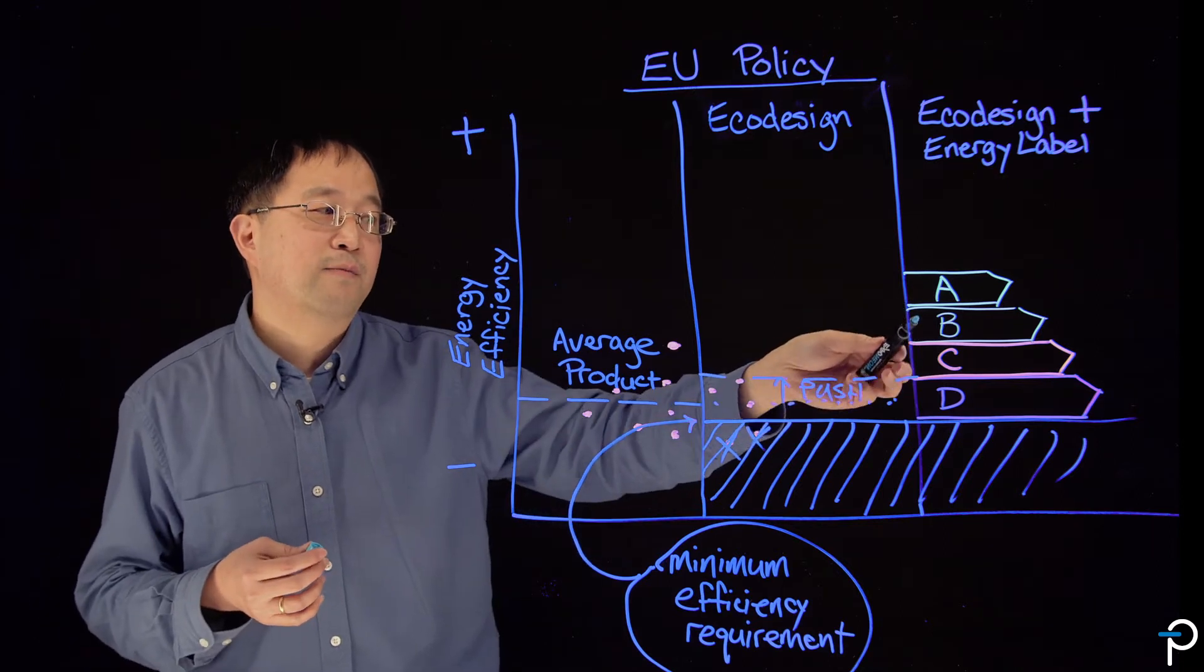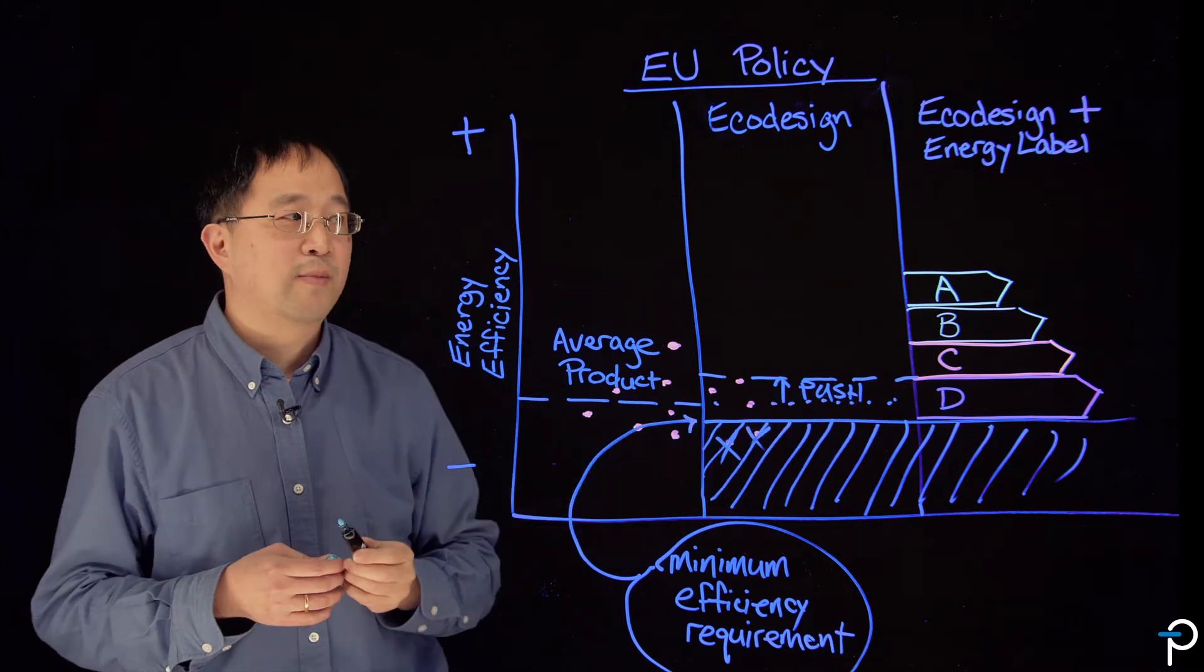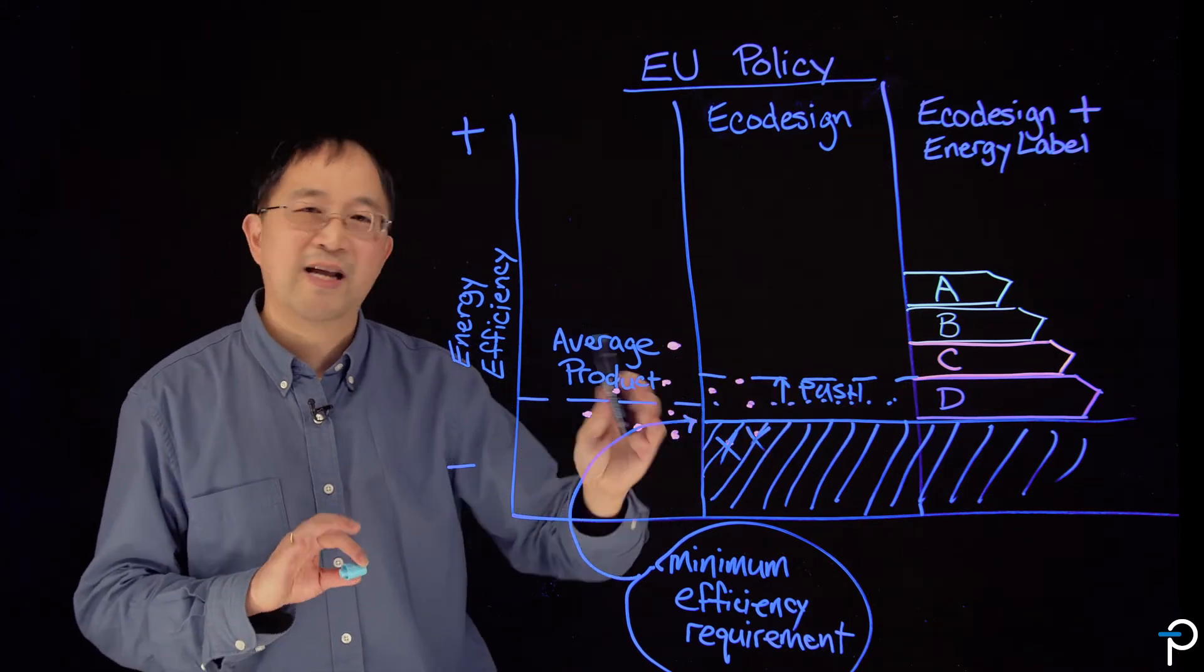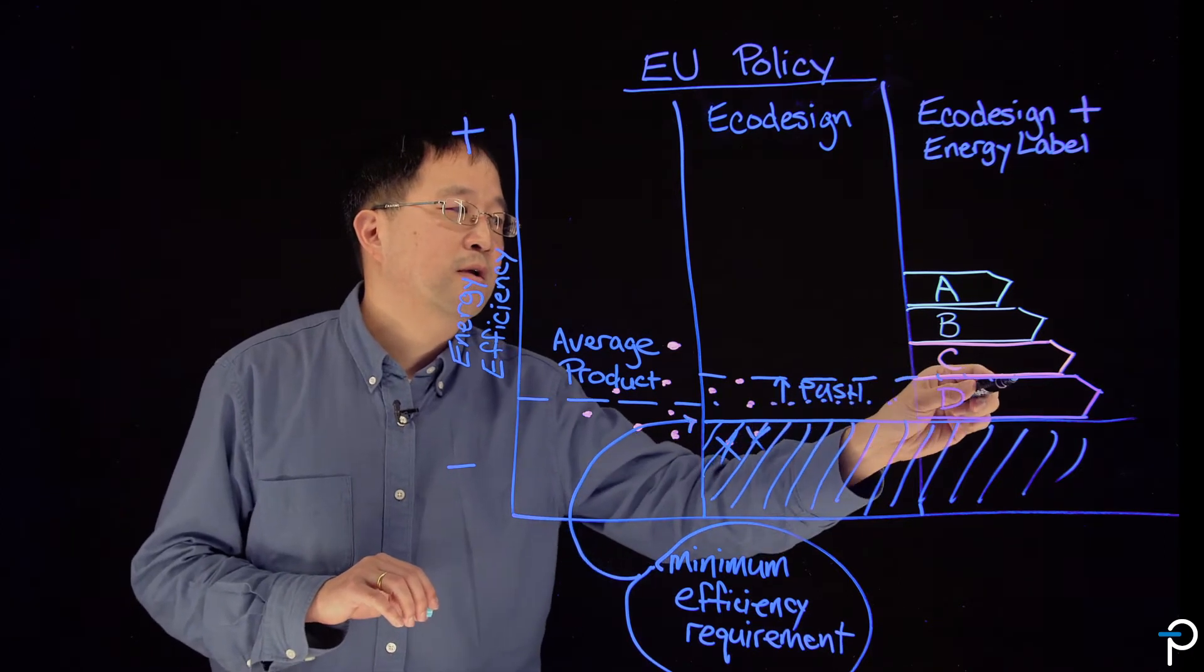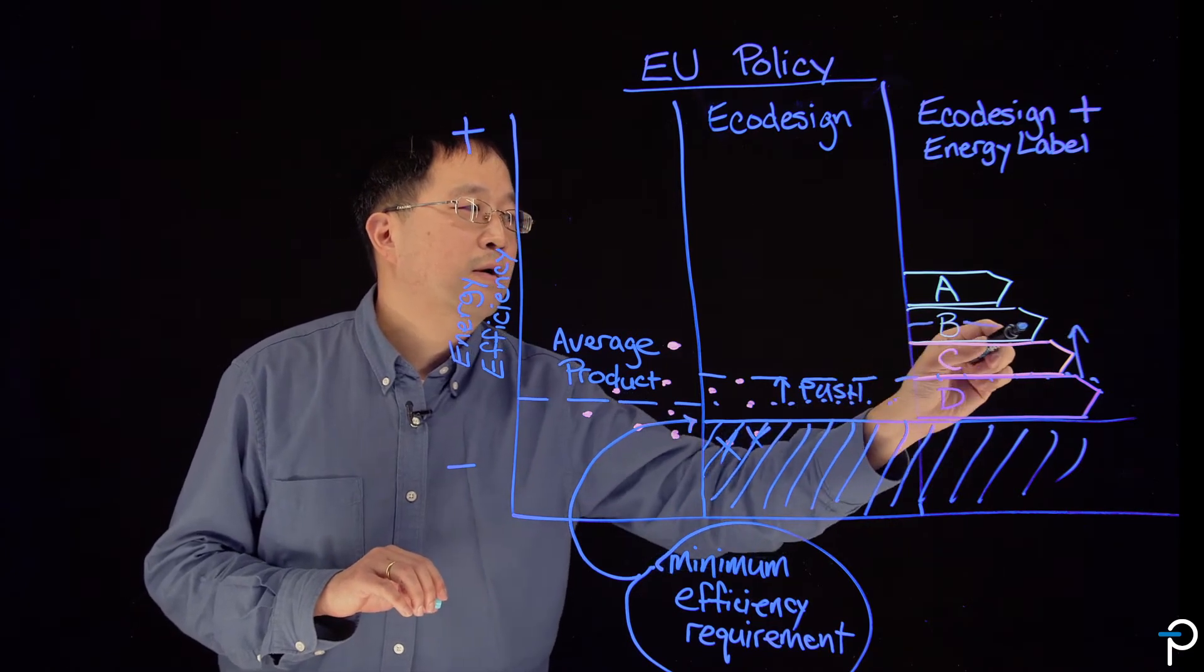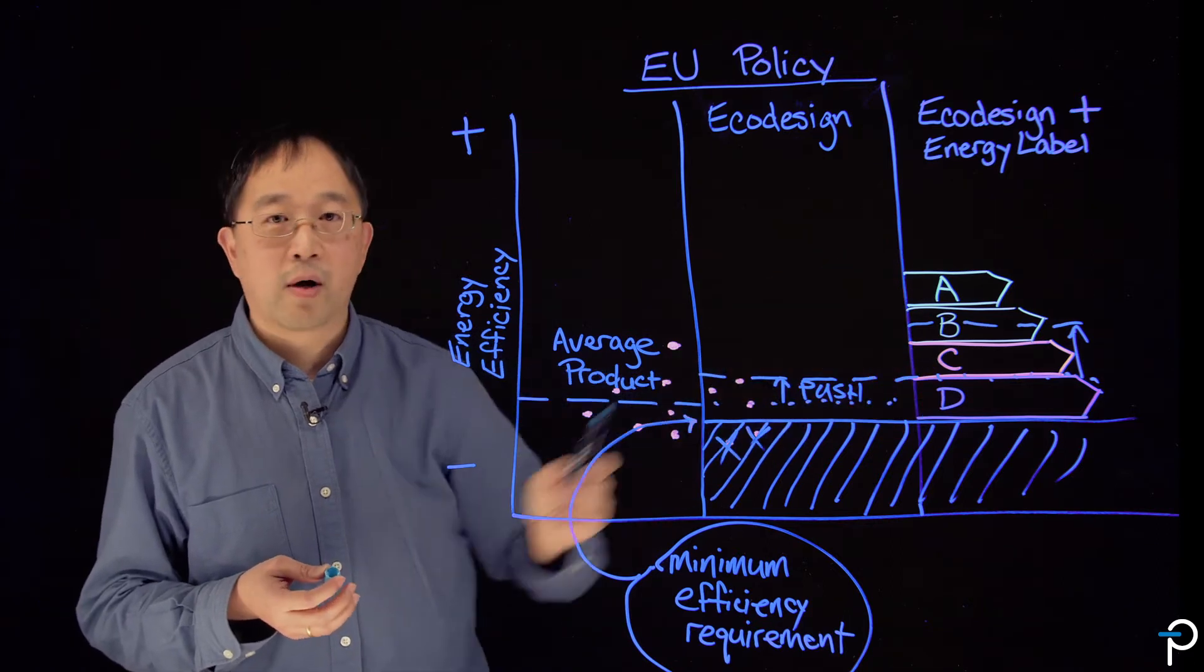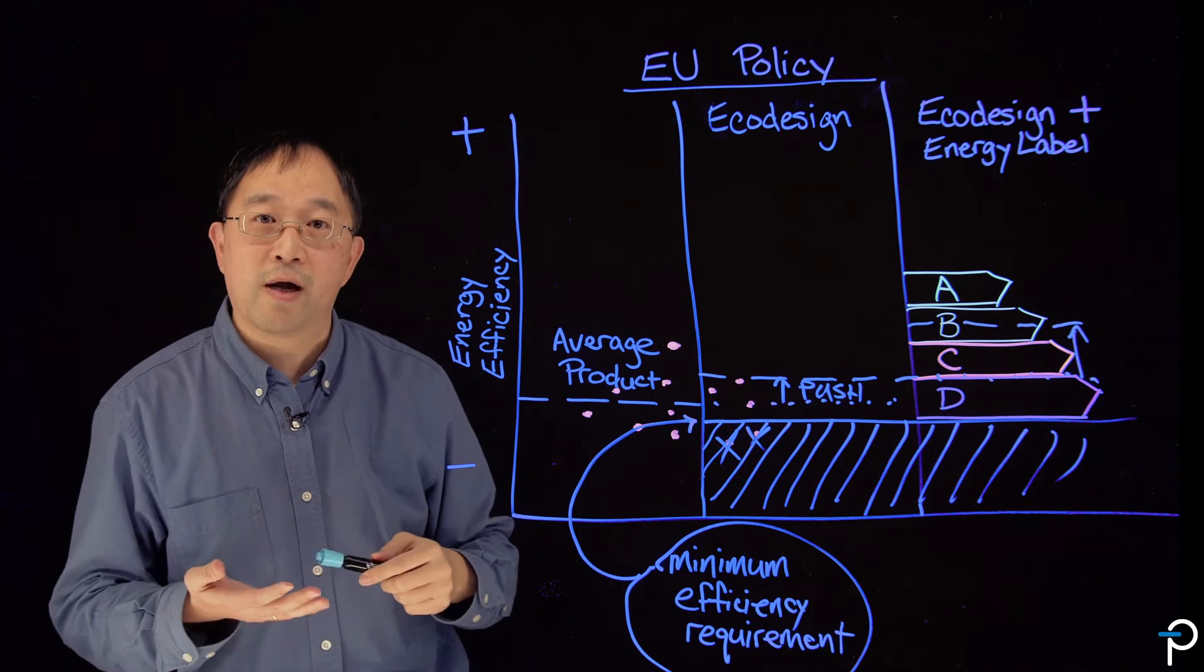Then, of course, you have B, C, and D in this case as well for the respective levels of performance. The idea here is in addition to pushing up on the bottom and taking out the worst performers in the marketplace, you can reset the new average to an even higher level, based on market motivators such as the desire to have the best grade products.